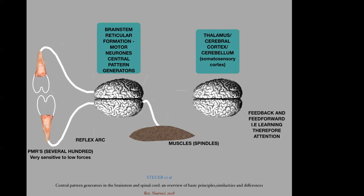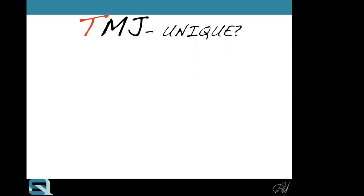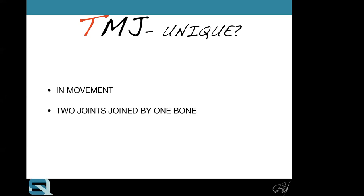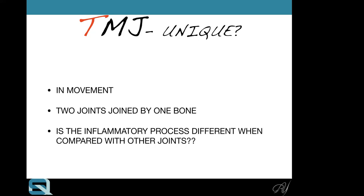When it comes to the TMJ, why is it unique? The TMJ is unique in several ways: it has both translation and rotation movement — two movements. It also has two joints joined by one bone, so if you do a crown on the right side, you can upset the left as well. That's why getting occlusion right is important. With inflammation: when you traumatize your elbow, knee, or ankle, it becomes inflamed. The TMJ is the same — if you traumatize it through overuse, a fall, getting punched, grinding your teeth, chewing gum, or biting your nails, it will become inflamed.